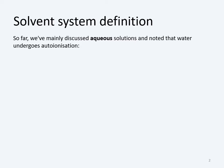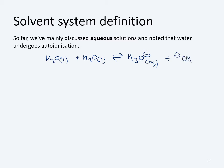For water, we have this general acid-base dissociation: H₂O(l) reacting with another water molecule is in equilibrium with H₃O⁺(aq) plus OH⁻, the hydroxyl. That's the classic auto-ionisation of water, and we know it has an equilibrium constant equal to 10⁻¹⁴. We've already met that, and we've met the pKw, which is 14.